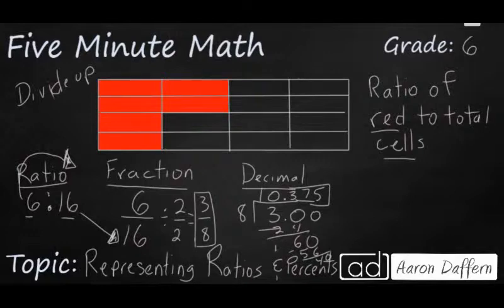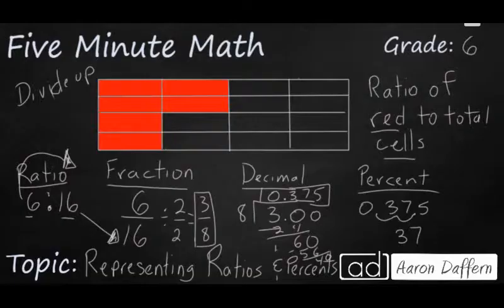Once you have the decimal, changing it to a percent is fairly simple. You take your decimal, in this case we have 375 thousandths, and you simply move the decimal twice to the right. So in this case we have 37.5%.